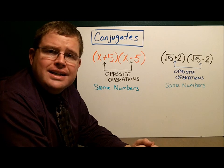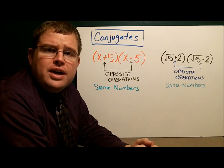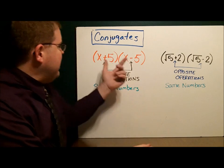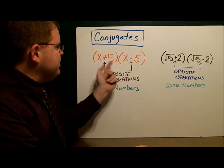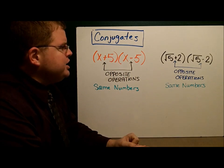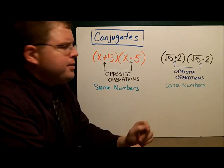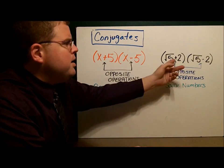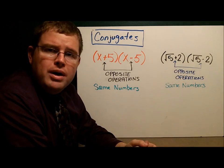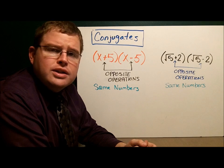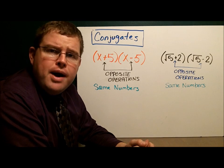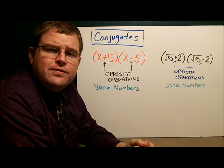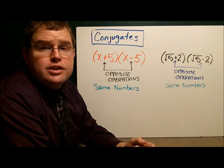When we have that, the only way to rationalize it is by using what we call the conjugate. Conjugates are binomials that have the same numbers but the opposite operation. So we might have the square root of 5 and 2 — one with addition, one with subtraction. Those are called conjugates, and their special property is that the middle terms — namely the square roots — fall out.